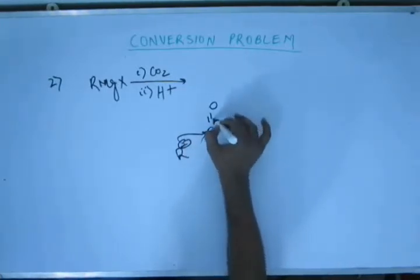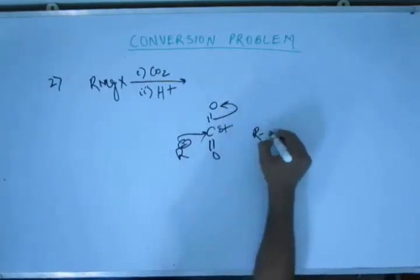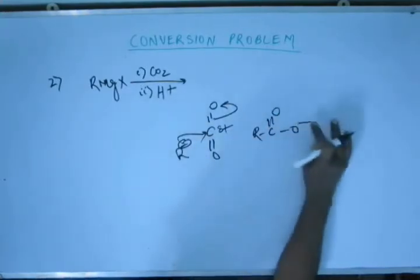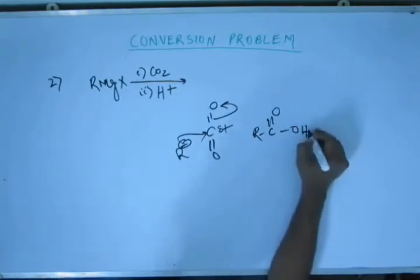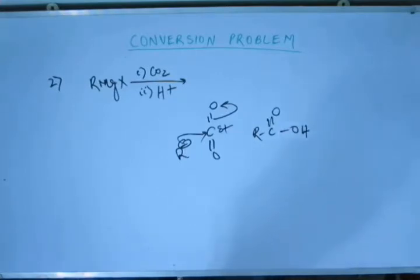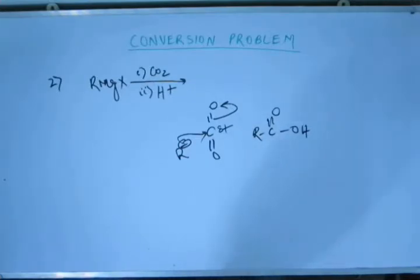The reaction is very fast. The Grignard reagent attacks, the pi bond breaks, and you have generation of a carboxylate ion. With subsequent protonation, this carboxylate ion turns into carboxylic acid — and that is the method of preparation of carboxylic acid. When we studied this reaction I told you this is the method of preparation of carboxylic acid, and here we are in the carboxylic acid chapter seeing this as a method of preparation. So whatever I said came true.